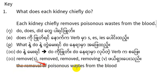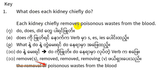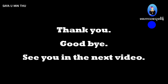The removal of the poisonous waste from the blood is the removal of the poisonous waste from the blood. What does each kidney chiefly do? Each kidney chiefly removes the poisonous waste from the blood. Thank you. Goodbye. See you in the next video.